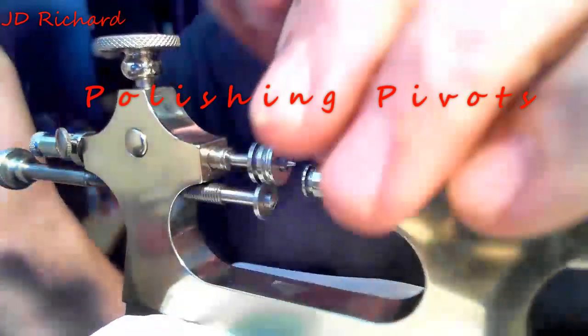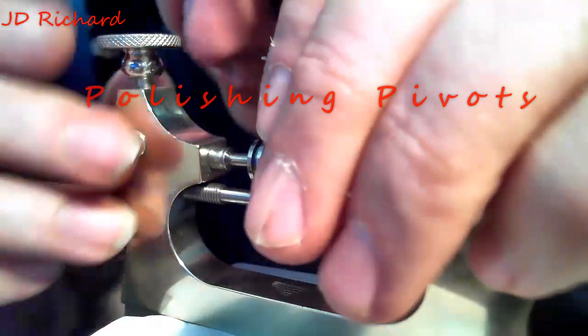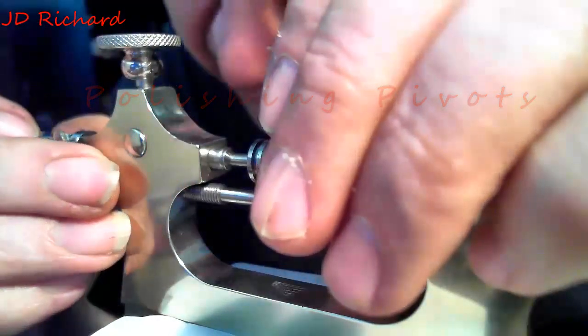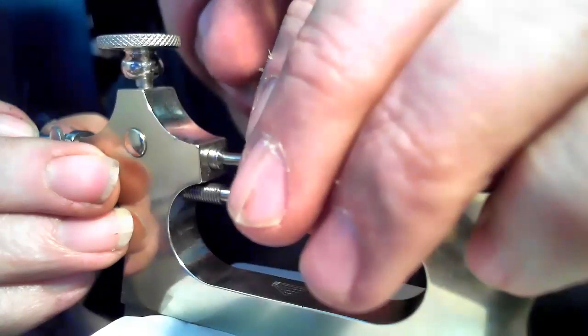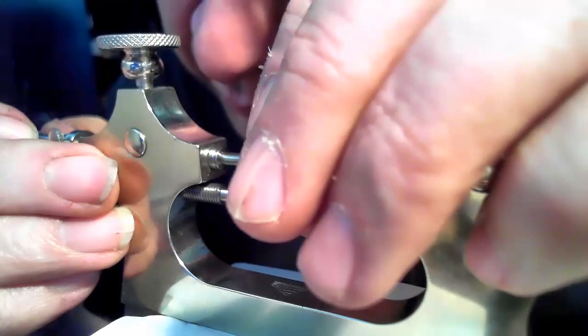Okay, I'm going to burnish the pivot on the end of this balance here. So the first thing I'm going to do is put the balance of the pivots into the right position here.